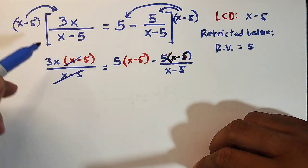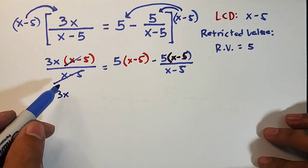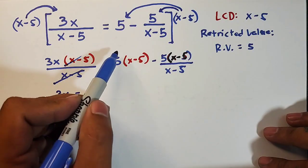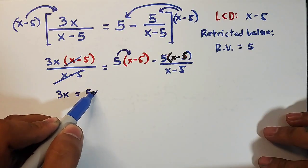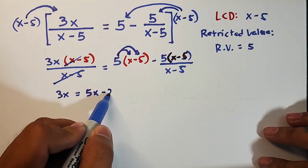And here your numerator, so it will become simply 3x. Okay, then equal to here, which is 5, 5 times x, which is 5x. Then 5 times negative 5, that is negative 25 or minus 25.